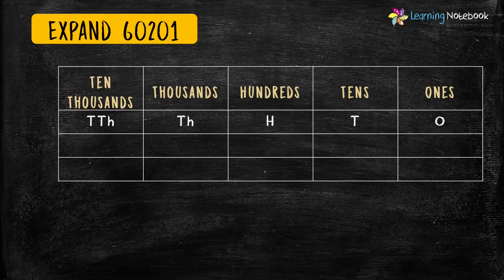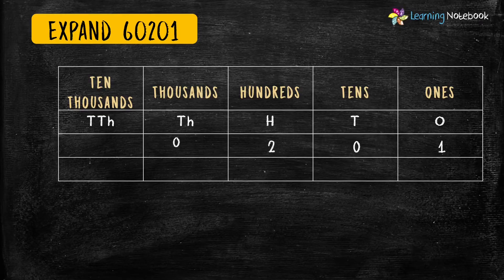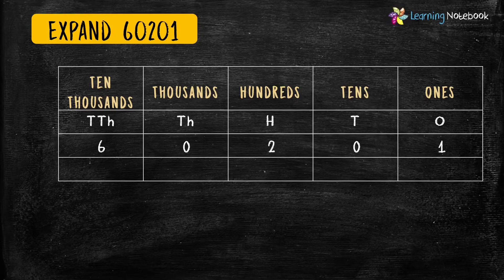Let's first form the place value chart of this number. We will write digit 1 at the 1's place, digit 0 at the 10's place, digit 2 at the 100's place, digit 0 at the 1,000's place, and digit 6 at the 10,000's place. Now we can write the place values of all these digits.